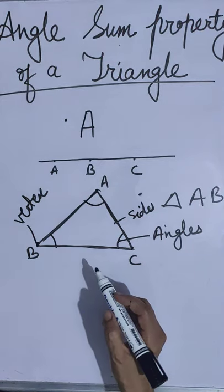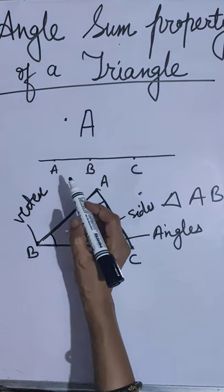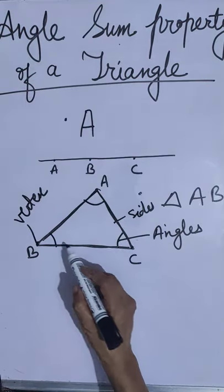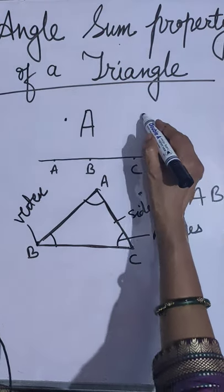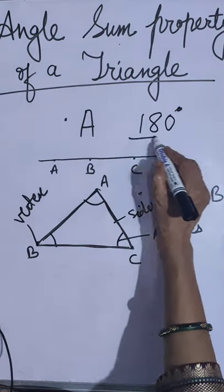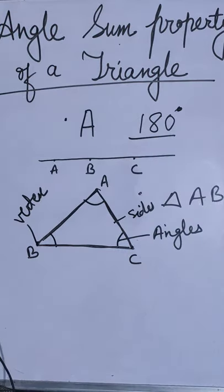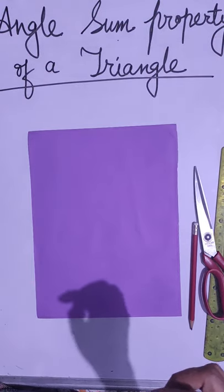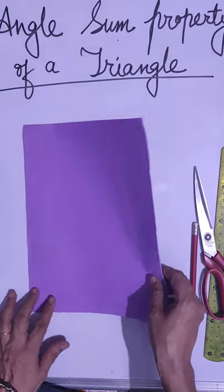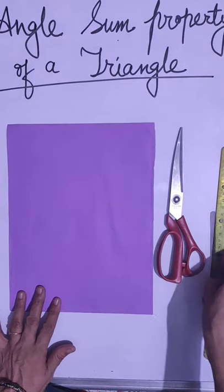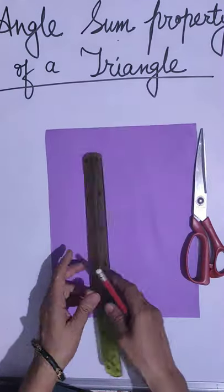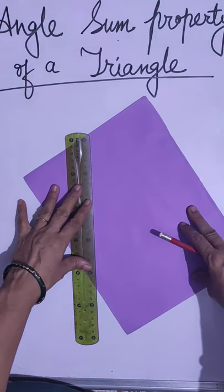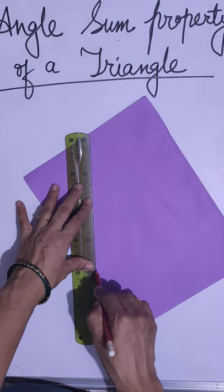Now let us do the activity on the angle sum property of a triangle. Do you know what is the sum of three angles of a triangle? It is 180 degrees. I am going to show you how it is 180 degrees. For this, I have taken one A4 size sheet, scissor, scale, and pencil. Now draw a triangle on it — any triangle.